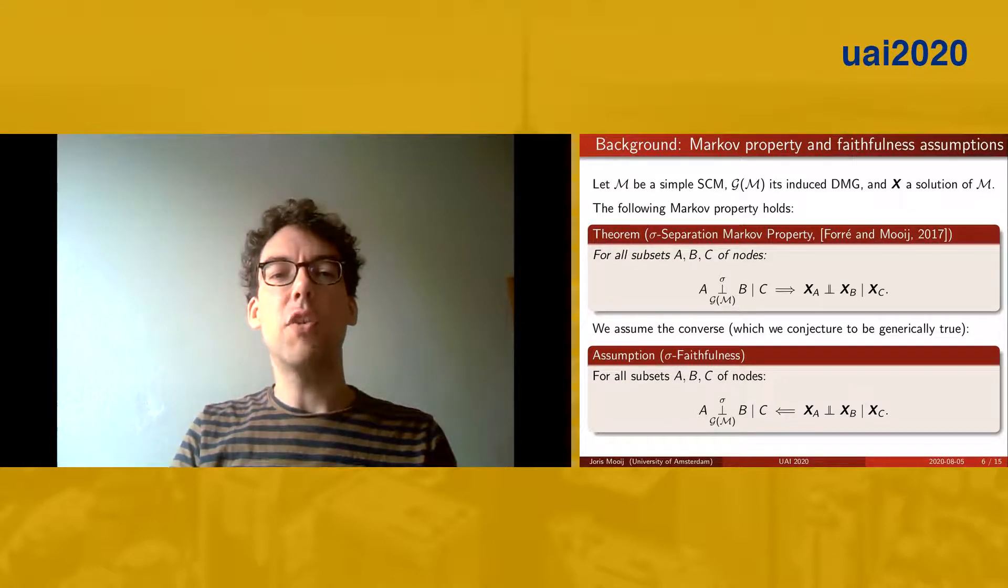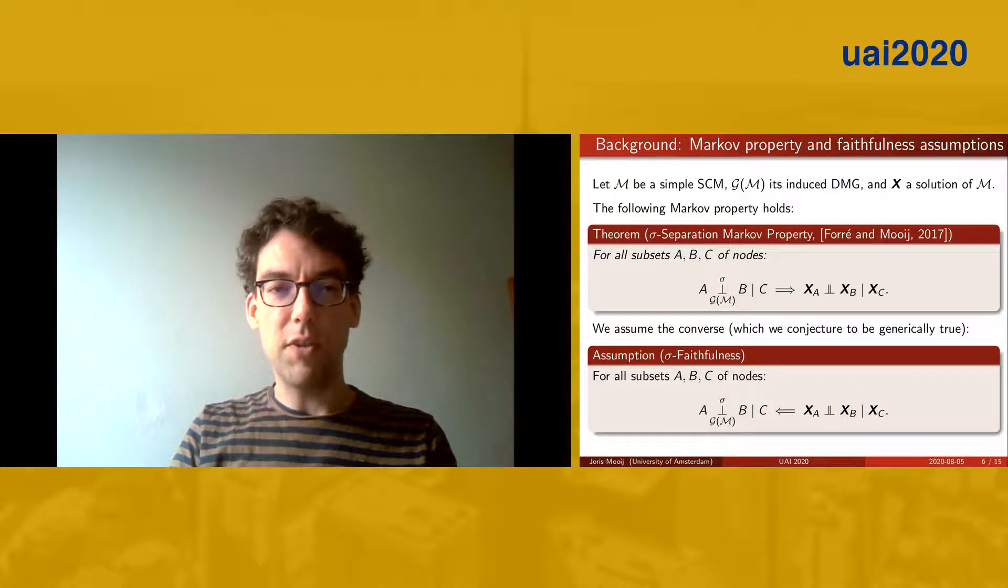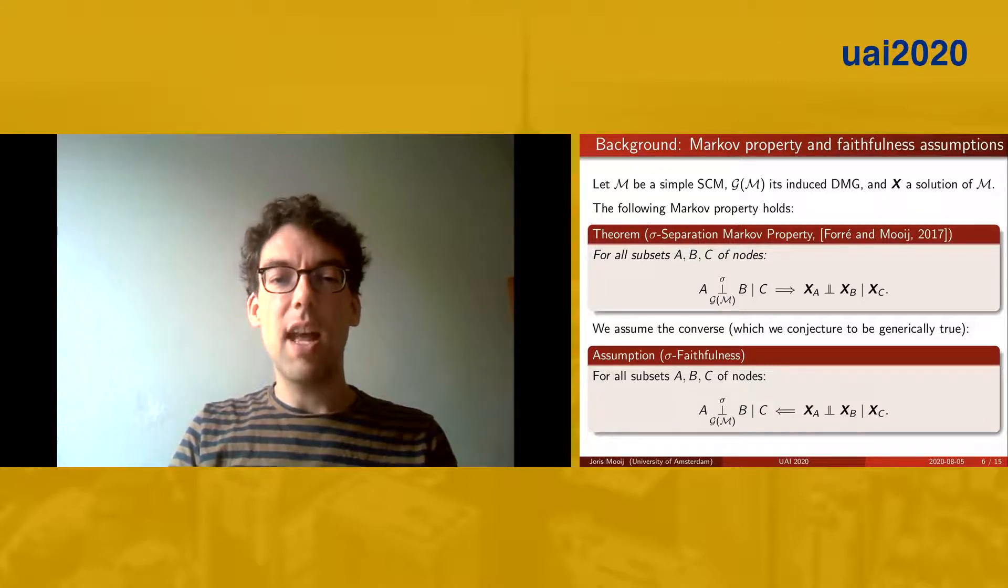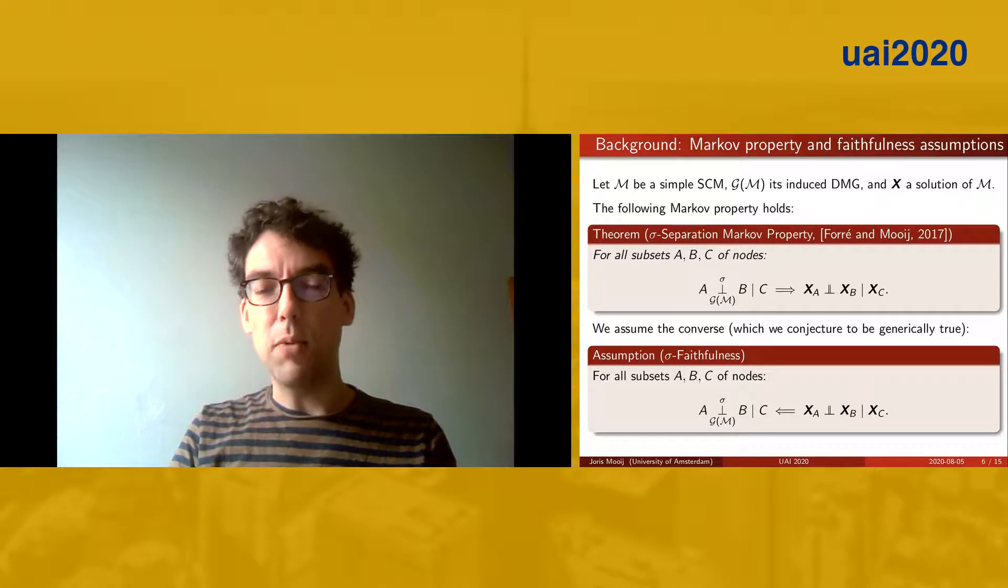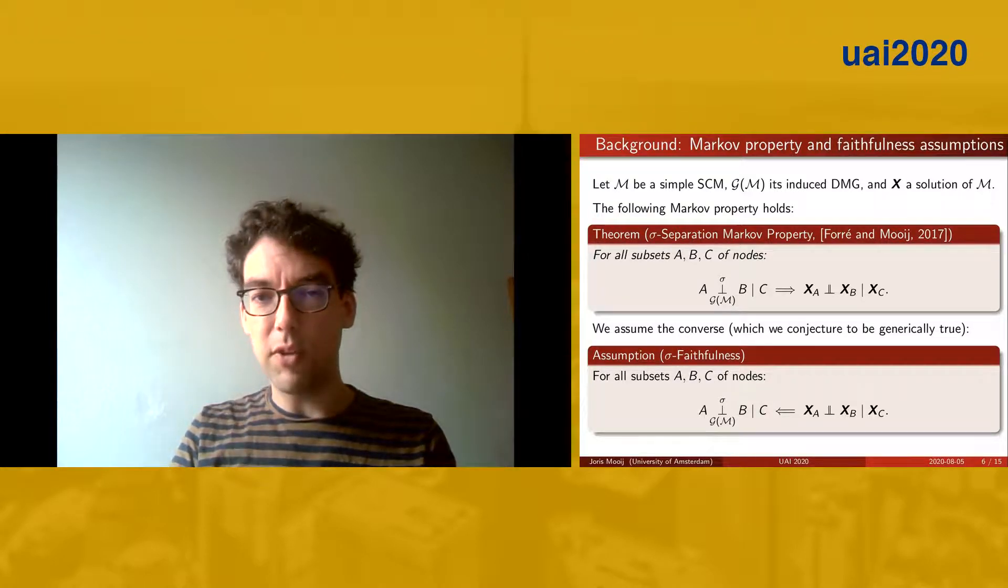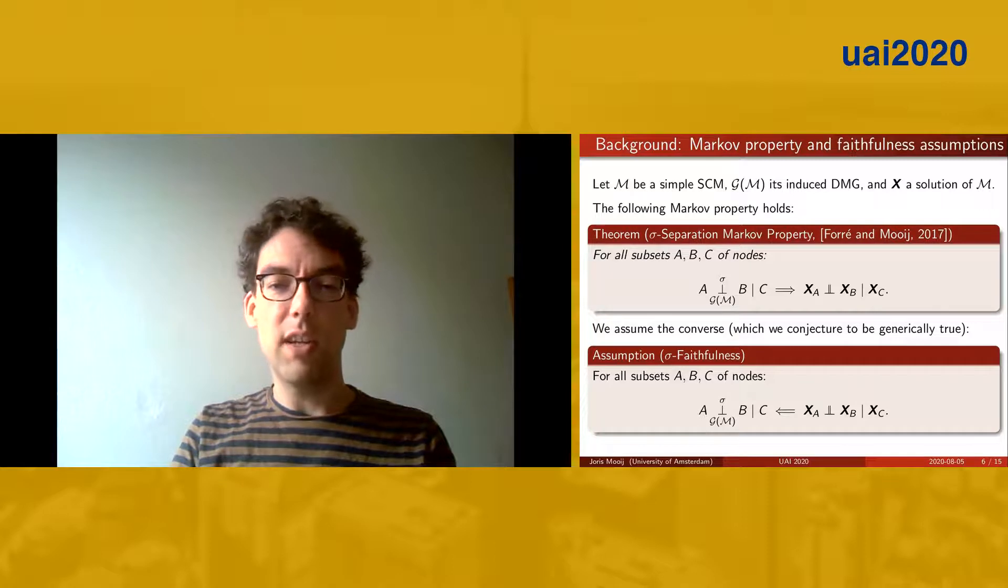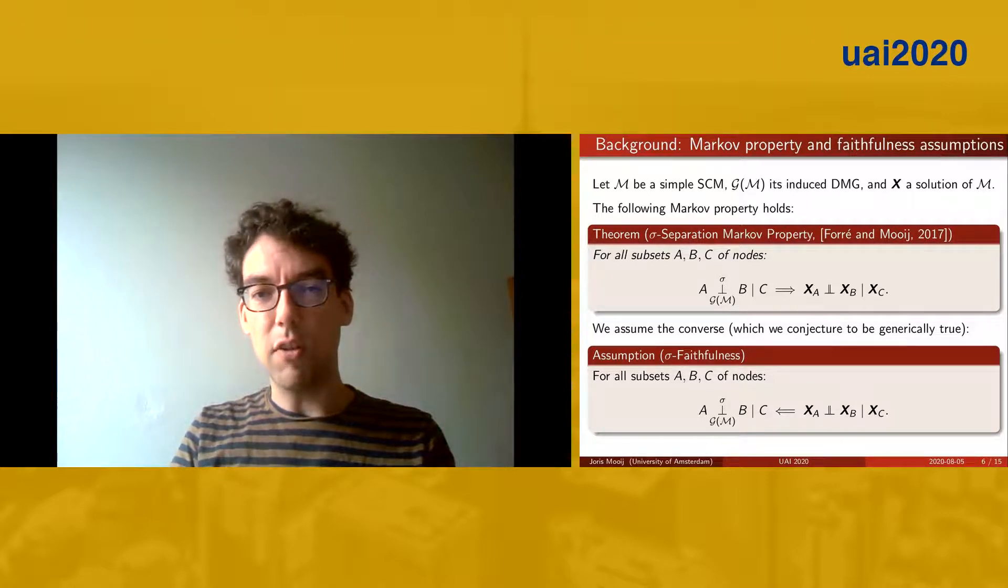This notion of sigma-separation leads to the sigma-separation Markov property for simple SCMs. Basically, one can show that any sigma-separation in the graph associated to a simple SCM entails a conditional independence between the corresponding solution components of the model, or if you wish, in the observational distribution associated to the model.